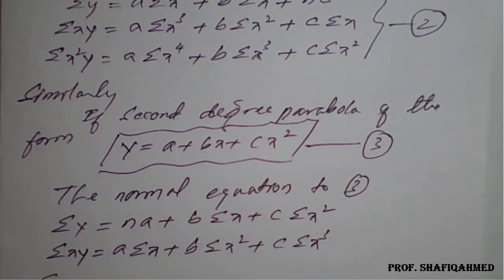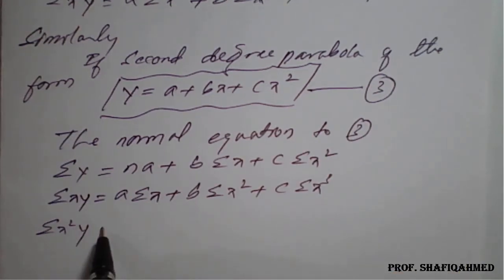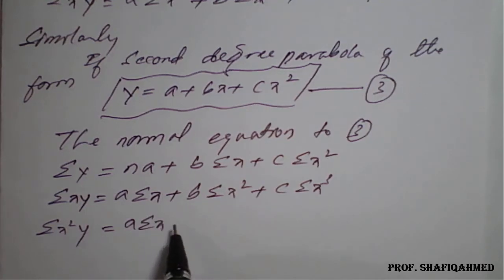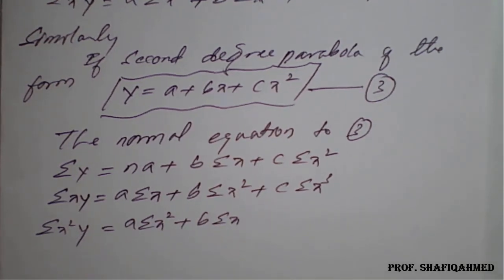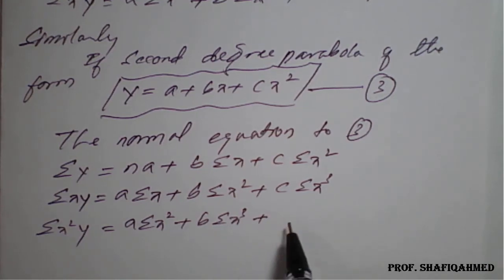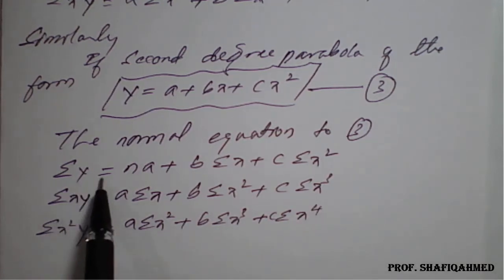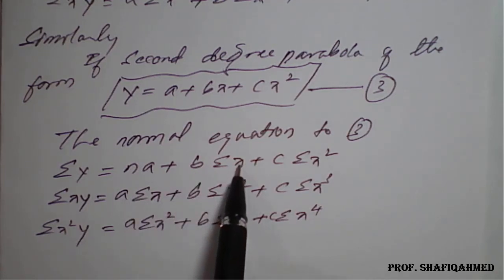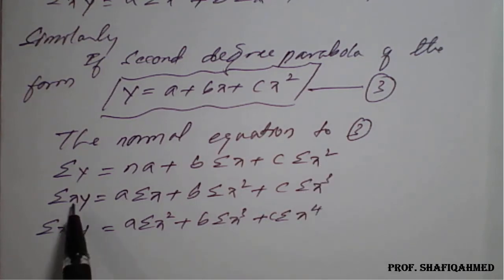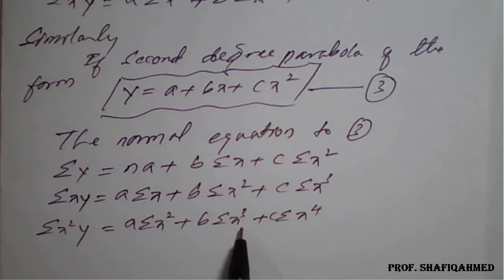Multiply x² on both sides of the first equation: summation(x²y) = a·(summation x²) + b·(summation x³) + c·(summation x⁴). Or, multiply only x to the previous equation — xy becomes x²y, summation x becomes summation x², summation x² becomes summation x³, and summation x³ becomes summation x⁴. Both approaches give the same normal equation.